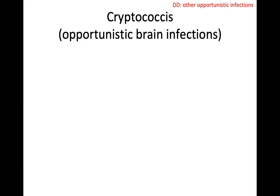Another differential diagnosis to consider when you have rim-enhancing lesions in patients with HIV are other opportunistic brain infections, and we are going to look at cryptococcus in the next vlog.